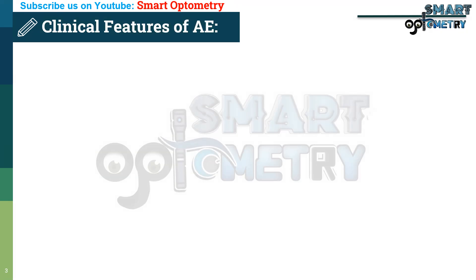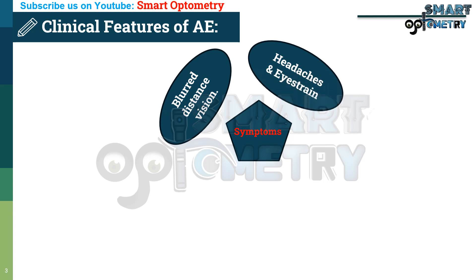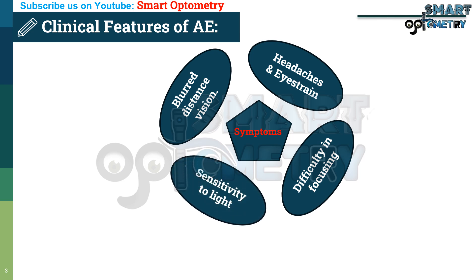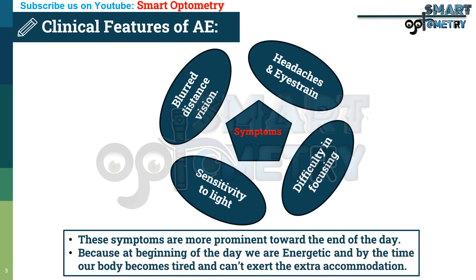Now let's see what are the clinical features of accommodation excess. Symptoms include: blurred distance vision, more prominent after near work; headache and eye strain after a short period of reading; difficulty focusing from far to near; and sensitivity to light. These symptoms are more prominent towards the end of the day because at the beginning of the day we are energetic, but over time our body becomes tired and can't exert the extra accommodation.